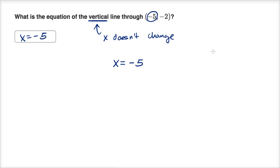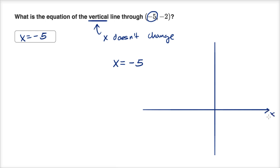And we can draw that out. So we have the x and y axes, and the point negative five comma negative two: negative one, two, three, four, five in x and negative one, two in y. We want a vertical line through that point — it just goes straight up and down, like this. Notice, x never changes. No matter what y is, x is equal to negative five. This has an undefined slope. It is a vertical line. Its equation is x equals negative five.